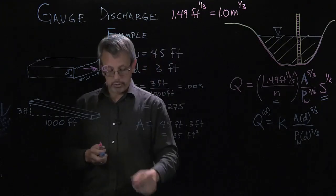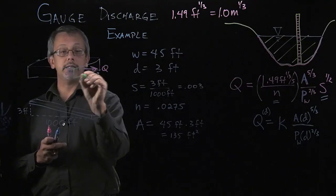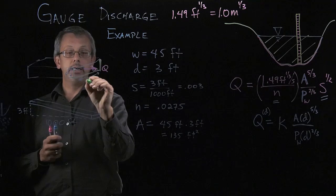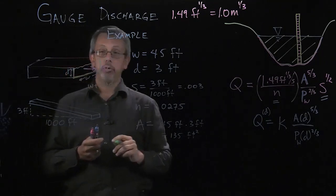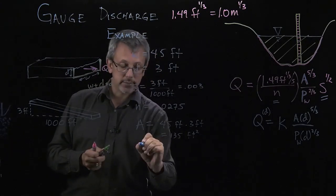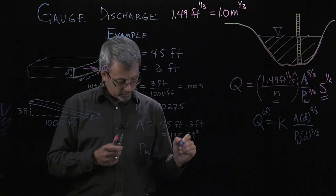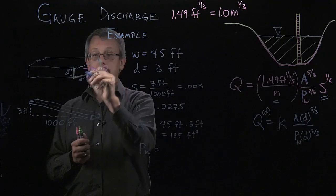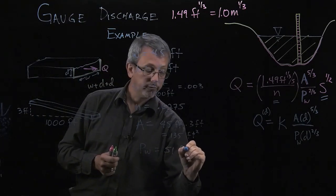Our wetted perimeter is the place where the water is touching the sides of my raceway. And it looks to me like we have W plus D plus D or W plus 2D. So our wetted perimeter in this case, PW, our wetted perimeter is going to be a length of 45 plus 3 plus 3, 51 linear feet.